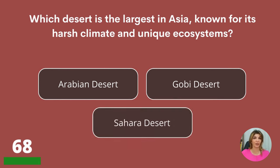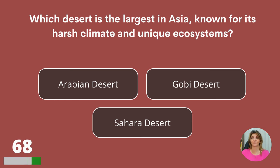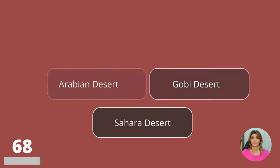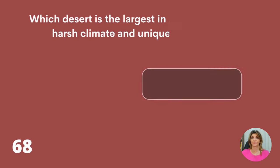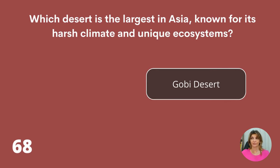Which desert is the largest in Asia, known for its harsh climate and unique ecosystems? The Arabian Desert, the Gobi Desert, or the Sahara Desert? The Gobi Desert.